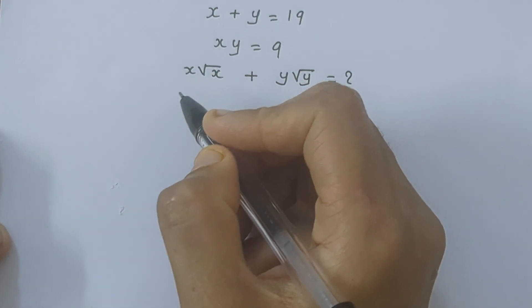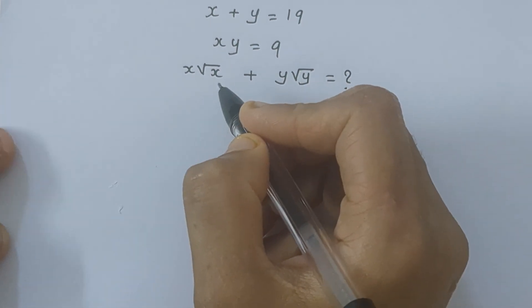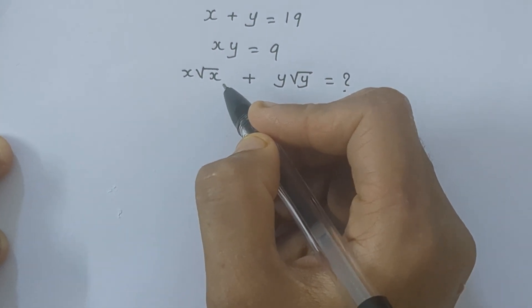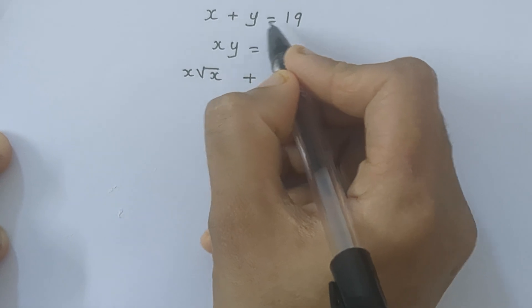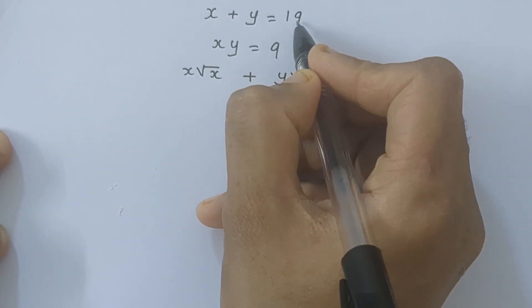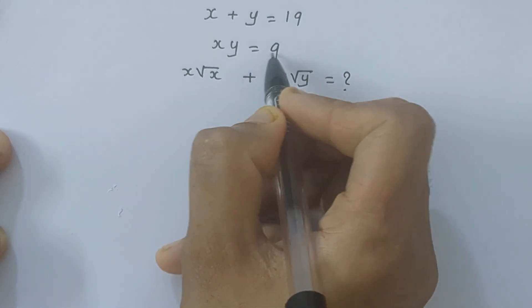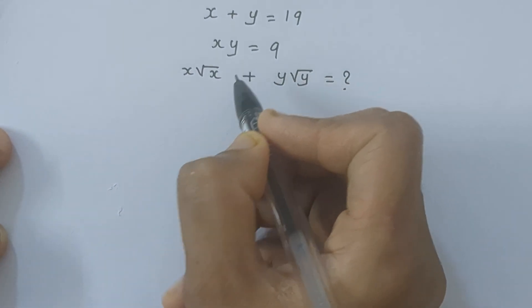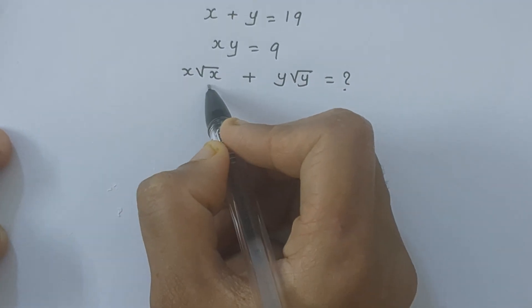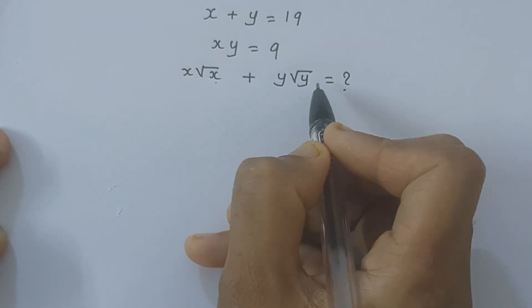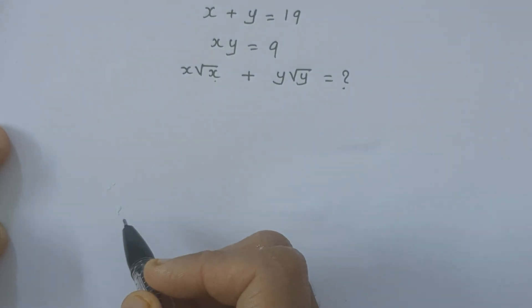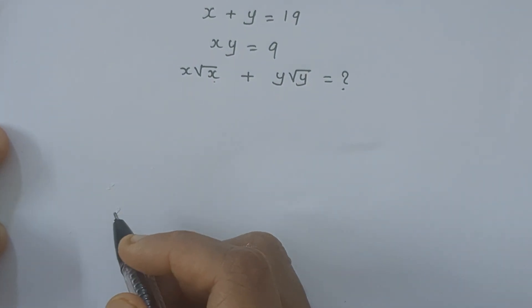Hello everyone, it's me Sitarra. Our question is: x plus y equals 19, xy equals 9, and we have to find out x√x plus y√y. So let's begin.